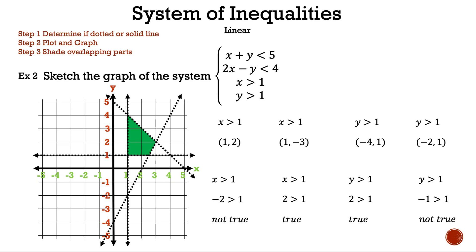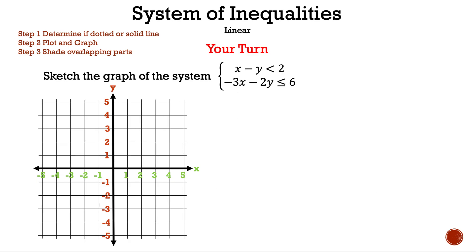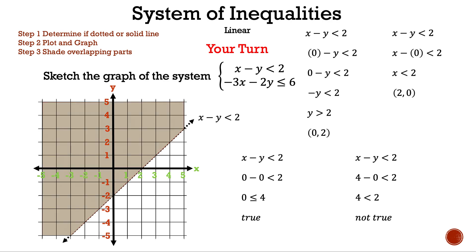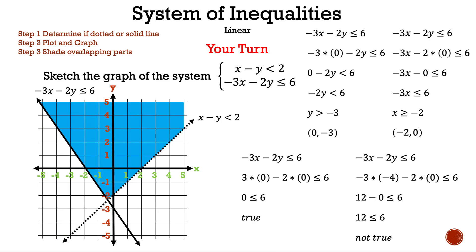That is example 2. Now it is your turn — go ahead and pause the video so you can take your time, and I will show you the result in 3, 2, 1. Here's the graph of x minus y is less than 2, and here is the graph with negative 3x minus 2y is less than or equal to 6. Did you get it correct? Awesome. If not, there's always tomorrow.